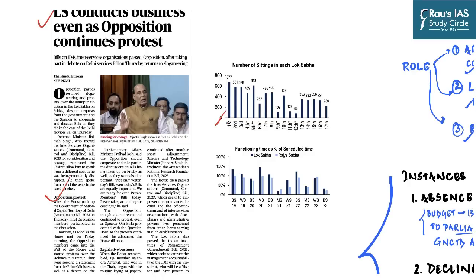This graph shows the number of sittings in each Lok Sabha. The highest is the First Parliament, which sat for 677 days. The overall trend has been declining — the 17th Lok Sabha has met for only 230 days. This is cause for concern because fewer sitting days means less time for the functions expected of Lok Sabha. Even if they utilize this time properly, it may be insufficient — and looking at another graph, the situation looks even grimmer.